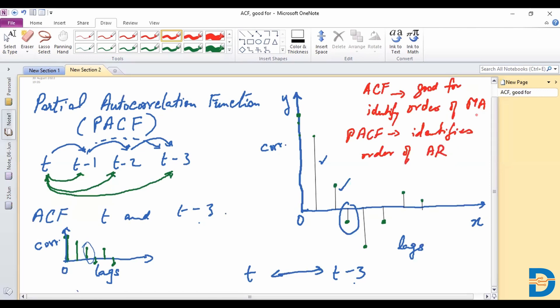For MA that parameter would be MAP and this would be ARQ. So that's the key difference between autocorrelation and partial autocorrelation.